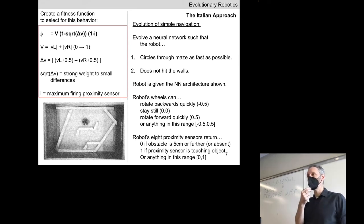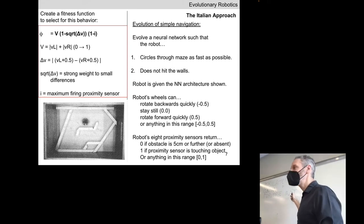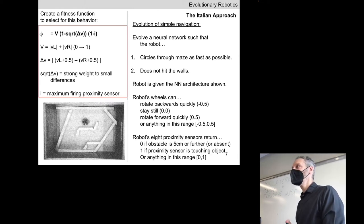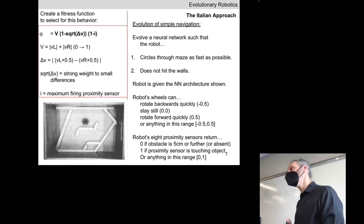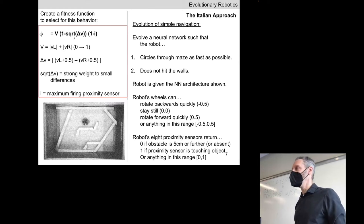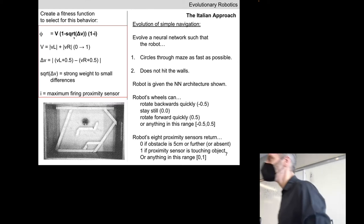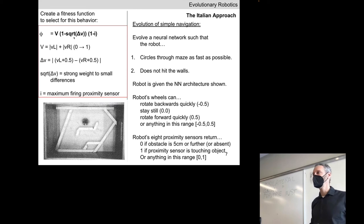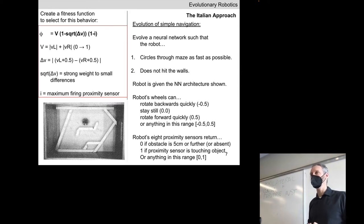We'll see perverse instantiation a lot in evolutionary robotics. There's a joke in the field: evolved robots are like teenagers — they'll do exactly what you asked them to do, but not in the way you wanted. They follow the letter of the fitness function but not its spirit — what it was meant to accomplish. How can they? They don't know the underlying motivation of us humans in writing down this equation.